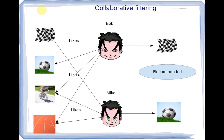Collaborative filtering has two flavors. When similarity is calculated between users, it is called user-based collaborative filtering. When similarity is calculated between the items being considered, it is item-based collaborative filtering. This may sound similar to content-based systems, but in strict item-based collaborative filtering, one does not look at item attributes — similarity is calculated based on how the ratings are similar between two items.